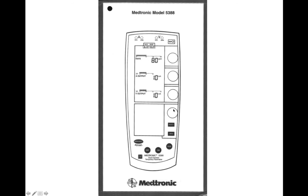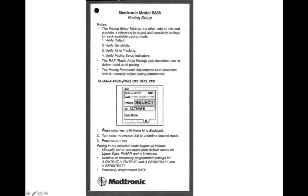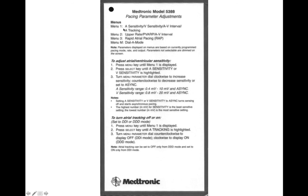You would rotate your knob here and see that menu displayed right here, and use your selections with this tab. This is also where you would find your atrial output sensitivities and your ventricular output sensitivities, as indicated in your instructions. This also goes through adjustment of your atrial and ventricular sensitivity.